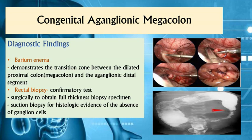Diagnostic exams: A barium enema is highly preferred for newborns and infants. This procedure shows the transition zone between the dilated proximal colon and the aganglionic distal segment, allowing the physician to identify the specific site lacking adequate peristalsis. A rectal biopsy is considered the confirmatory test for Hirschsprung disease, examining for histologic evidence of the absence of ganglionic cells from the Auerbach and Meissner plexuses.